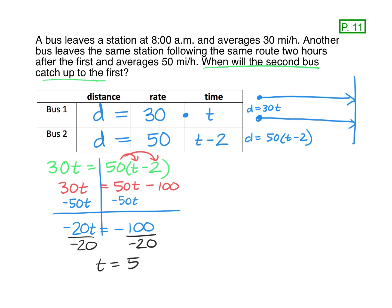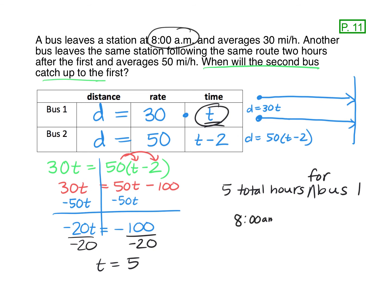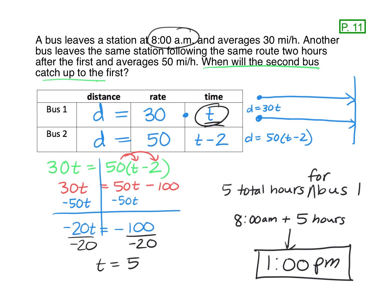So it is going to be five total hours — and remember, that total hours was for bus one, because bus one was the T. Bus one left the station at 8 a.m. If we add five hours to that: 9 o'clock is one hour, 10 o'clock is two hours, 11 o'clock is three hours, 12 o'clock is four hours, and five hours would be one o'clock. So at 1 p.m., the two buses will catch each other and they'll be at the same spot. And that concludes Lesson 4.2. Thanks for watching, bye.